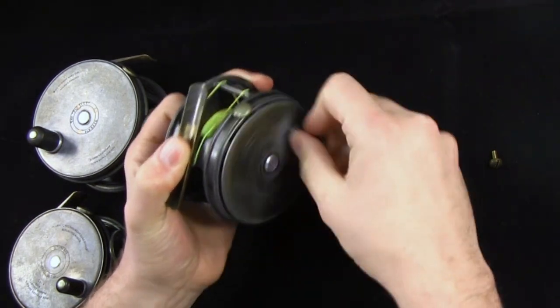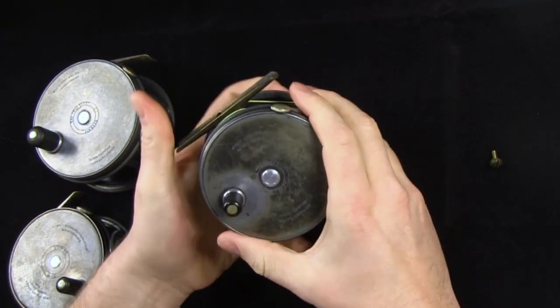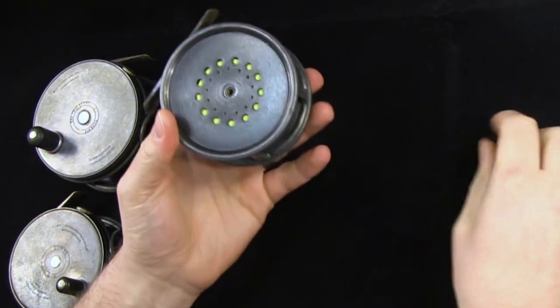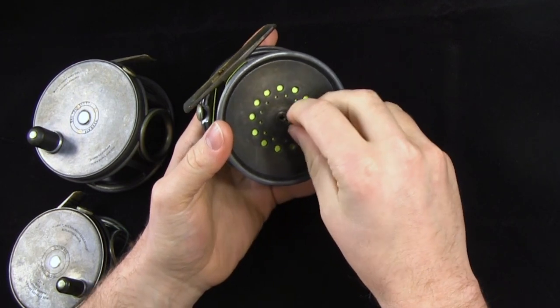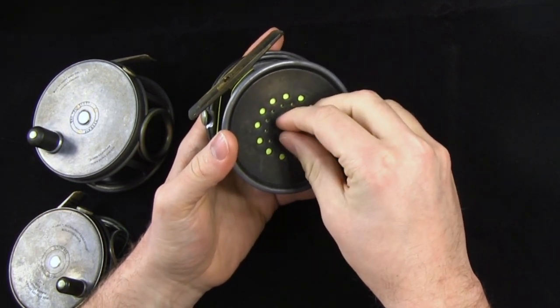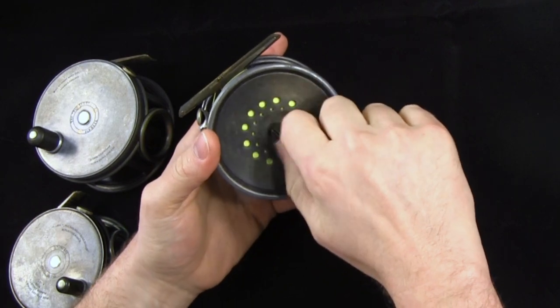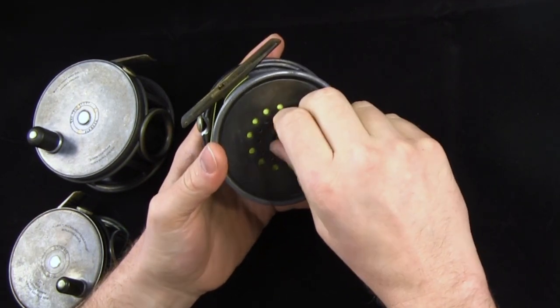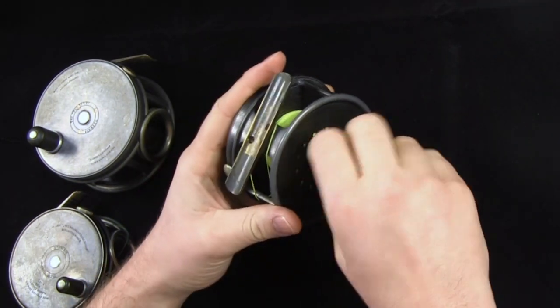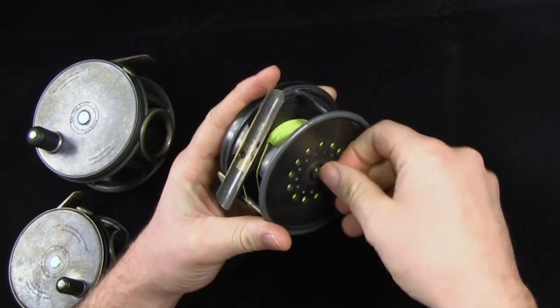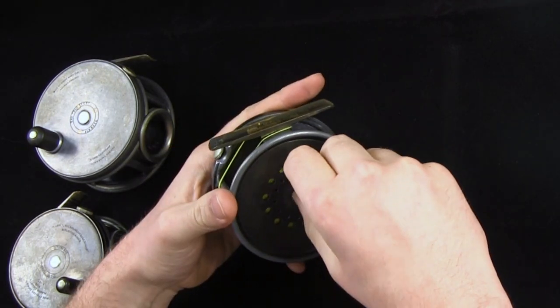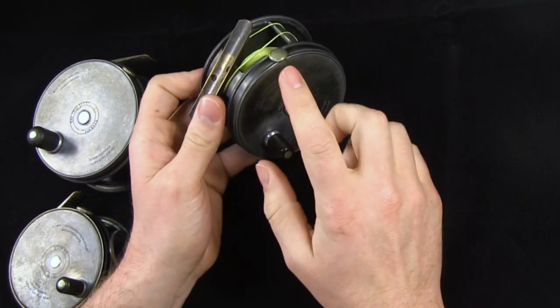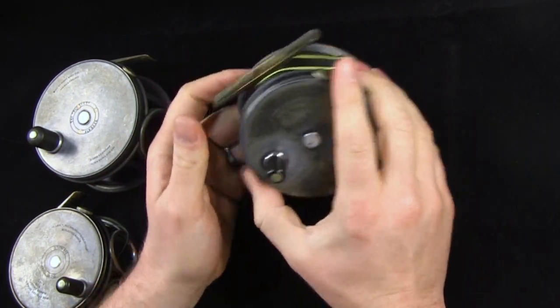You can also start to see that the tensioner knob is different. Foot has gone to a flat brass. On the back, you'll start to see some difference in how they did the circles around here. This is not a reverse, this is a regular one. This was before they did the reverse set screw. So it goes righty tighty, tighten it all the way down. Right hand wind, three and three quarters.